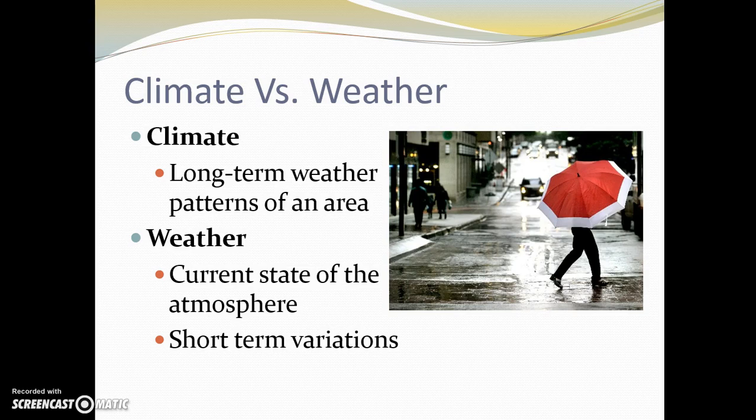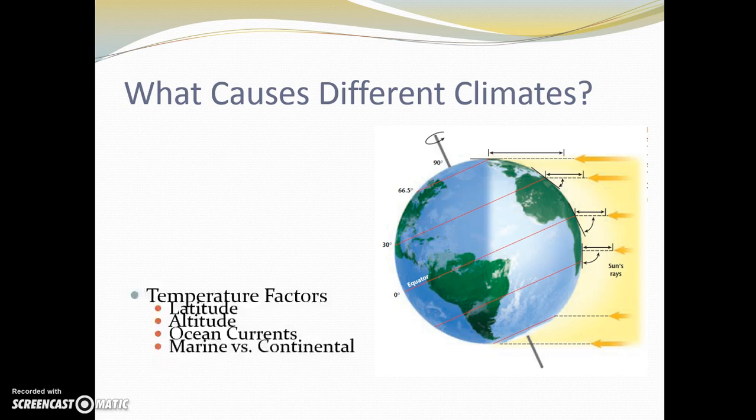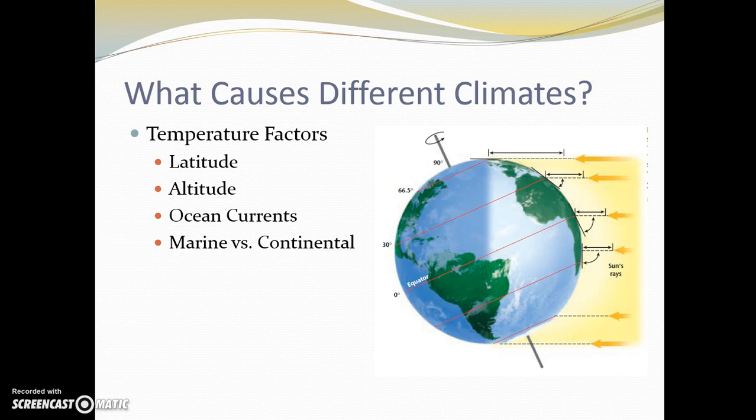What causes different climates in different parts of the world? Well, there are different factors. Temperature factors include where a place is located as far as latitude is concerned. The closer it is to the equator, the warmer it's going to be because it's receiving more direct light from the sun. The further it is away from the equator, the colder it gets because the light is not hitting it directly. Altitude has a lot to do with it—how high above the ground a place is. The higher it is in elevation, the colder it's going to get. Ocean currents are also important because they're moving winds with them and either warm or cold water.